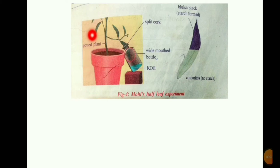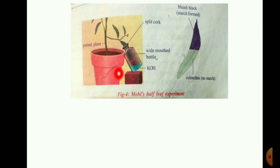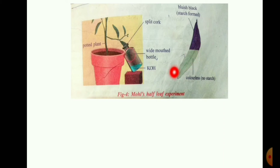Half of the leaf is inside the bottle and the other half is outside the bottle. After the iodine test, we observe the results. The KOH solution inside the bottle has absorbed the carbon dioxide present there.